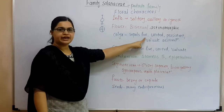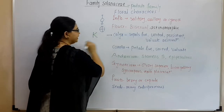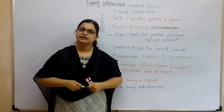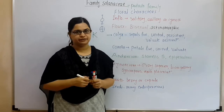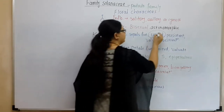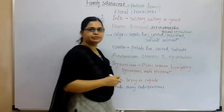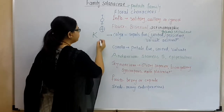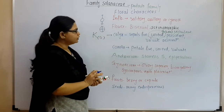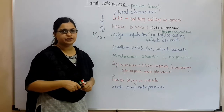Calyx: sepals 5, and they are united — this condition is called gamosepalous. United means we put a bracket around the 5. Then valvate aestivation — we have seen the aestivation types, and this will be required to draw the floral formula. Corolla: petals 5, again united — this condition is gamopetalous — so again we put a bracket around the 5.